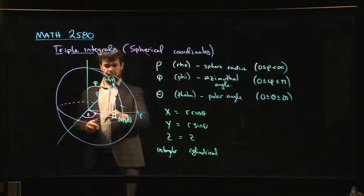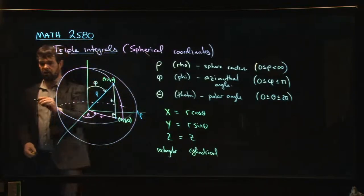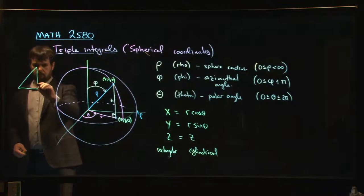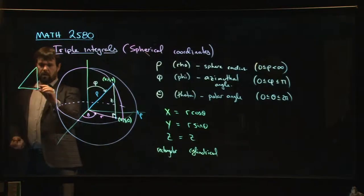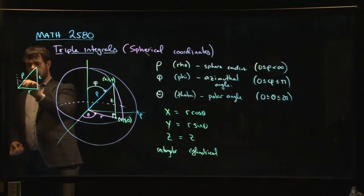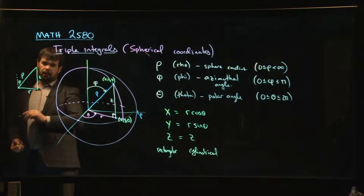So, the relationship, well, it's sitting here in this right-angled triangle. Let's redraw it. And we have rho, we have z, we have r, and we know that this angle down here, that's phi.